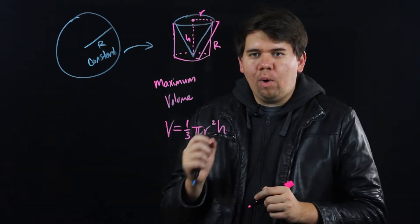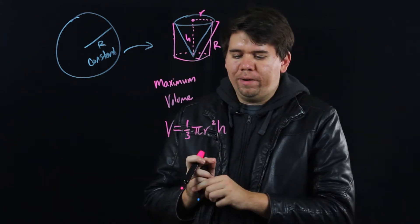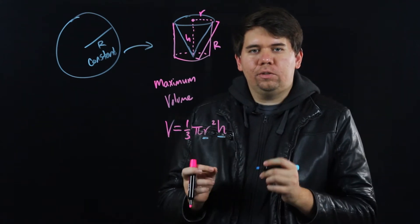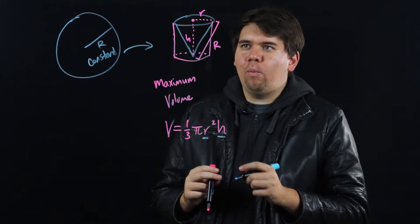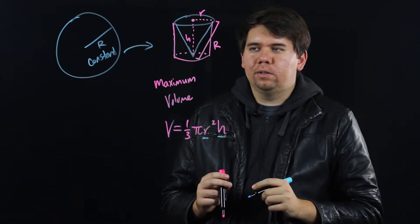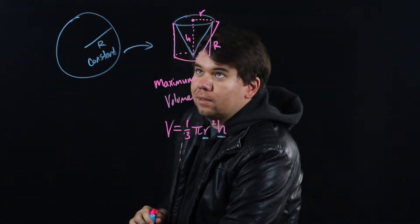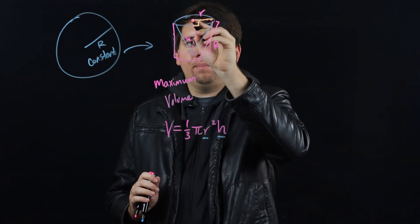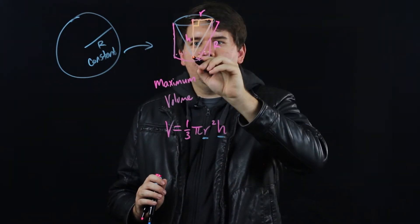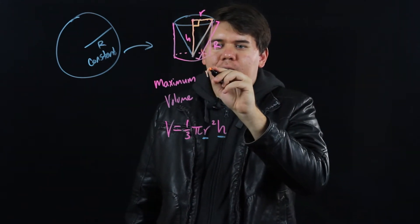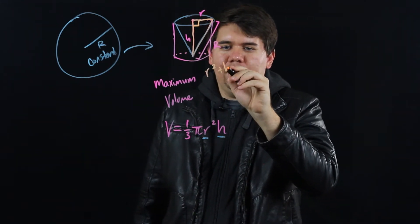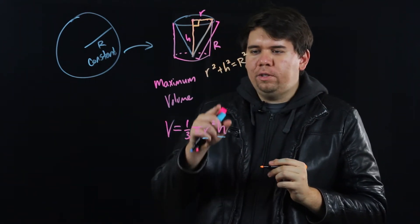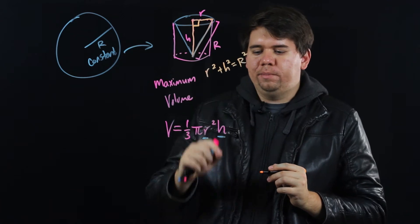Problem. This isn't a function of one variable. This is a function of two variables, both my little r and my little h. In order to change this, I need to think of some way to relate my r and my h. But it's staring us right in the face. Right here we have a right triangle. The obvious relationship between my little r and my little h is just given by Pythagoras. Little r squared plus h squared is my big R squared.